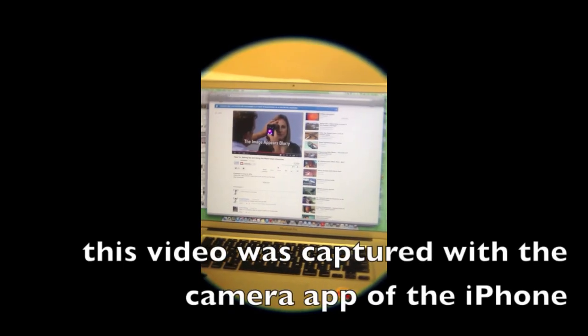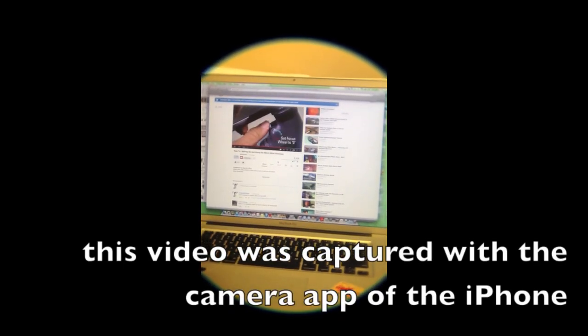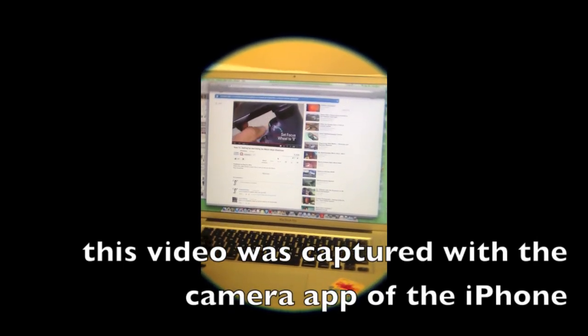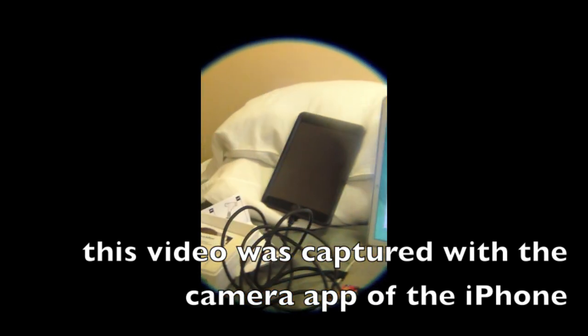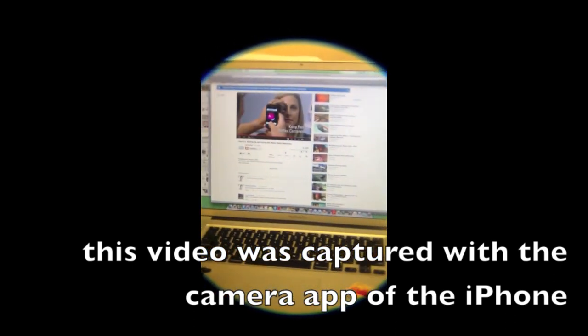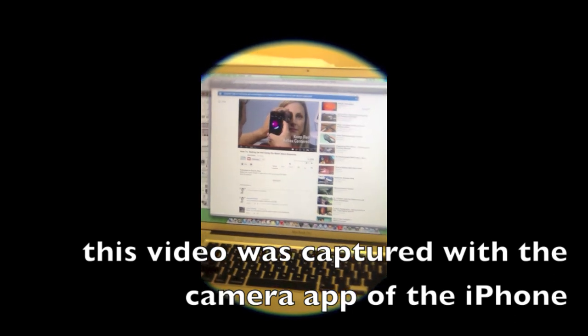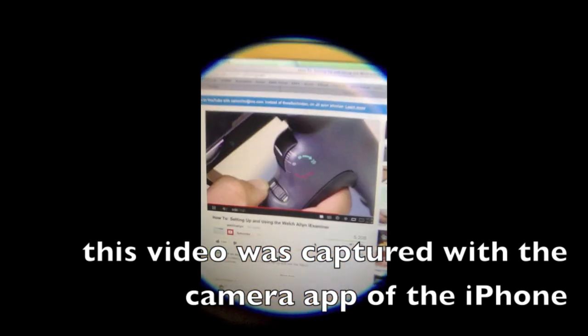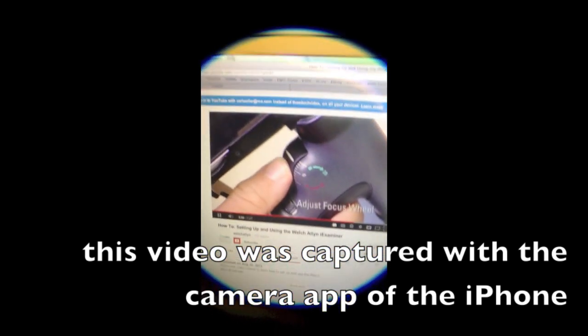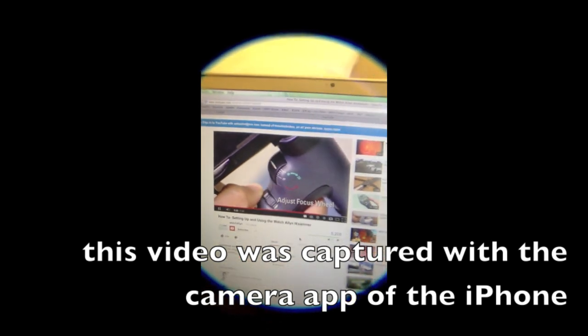If the image is out of focus, try the following. Check to see that the focus wheel is set at zero. Make sure you are keeping the red reflex centered on the screen, otherwise it may be focusing on a different part of the eye. If the image is still blurry, adjust the focus wheel to compensate for refractive error.